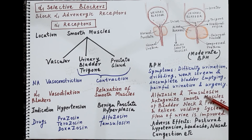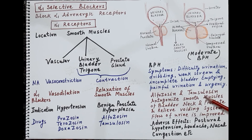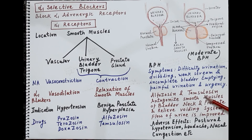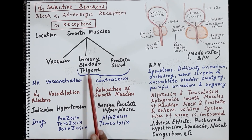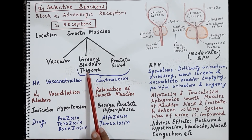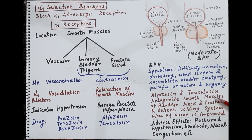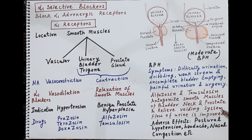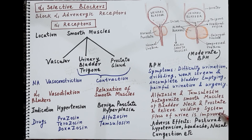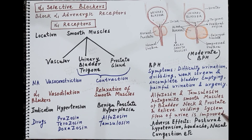Alpha-1 blockers alfuzosin and tamsulosin are found to be very useful in the treatment of benign prostate hyperplasia. As alpha-1 blockers, they produce relaxation of the smooth muscles of the urinary bladder trigon — the bladder neck — and also relax the smooth muscles of the prostate gland. This relieves the voiding symptoms, making urination easier, improving flow of urine, and allowing more complete emptying of the bladder in patients with benign prostate hyperplasia.